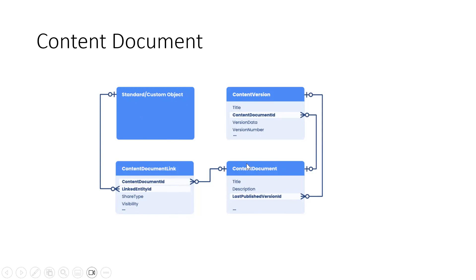Now this content document could be a file type like PNG, JPG, or S Note. What is S Note? S Note is nothing but the note that I showed you I created — that was nothing but S Note. So when you create a note on an account, the file type of that note is S Note. When I attach a JPG file to the account object, that file is also a content document and its file type is JPG or PNG or whatever.